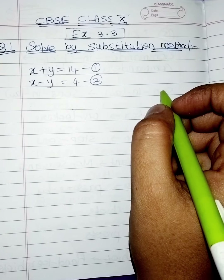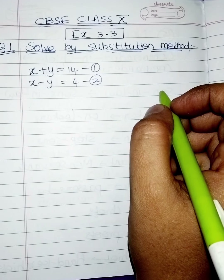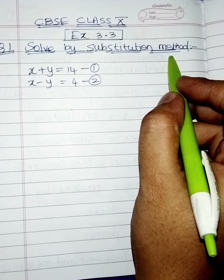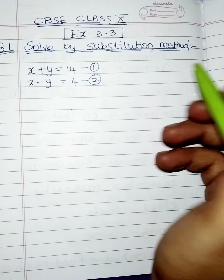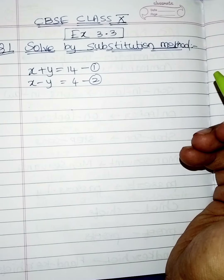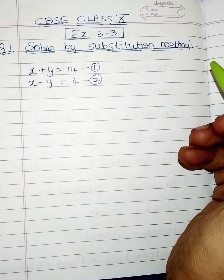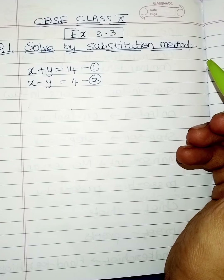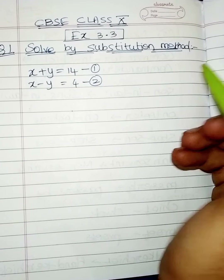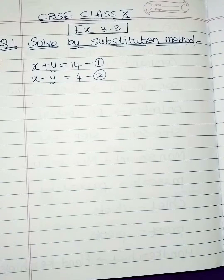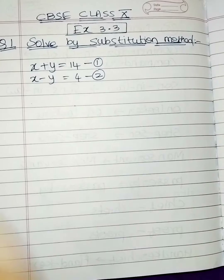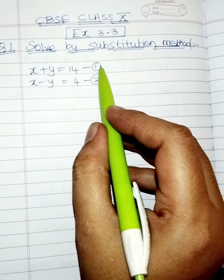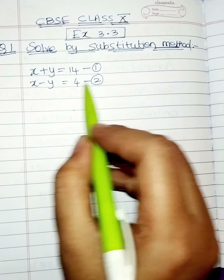In this video we will continue with Exercise 3.3, question number one. We need to solve by the substitution method. There are three methods: substitution, elimination, and cross multiplication. For this year we only have substitution and elimination. To solve by substitution method, write the given equations and mark them as first and second.